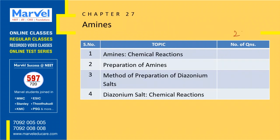Next: Amines — 24 questions from the last 8 years, expecting either 2 or 3 questions. The first topic has 15 questions, the next 2 topics have 8 questions, and the last topic has 1 question. If you cover the 4 topics well, you can score either 8 or 12 marks. Concentrate a little on this chapter.